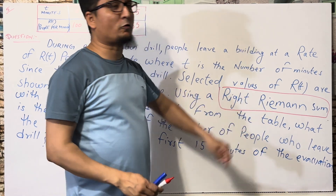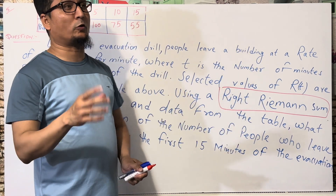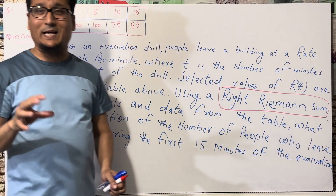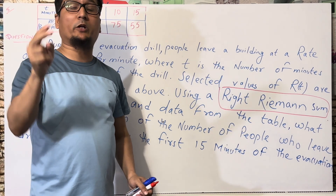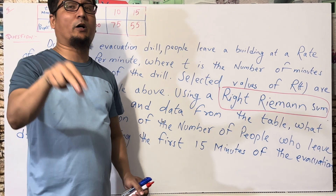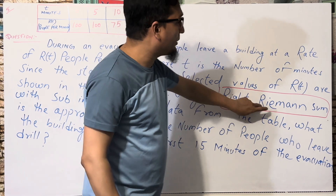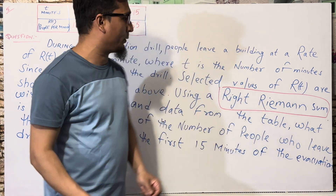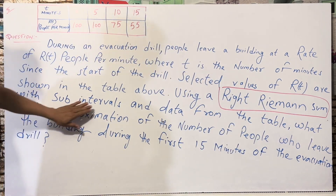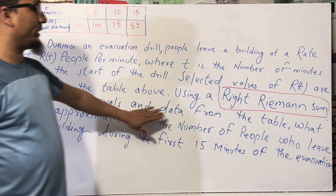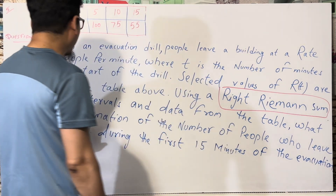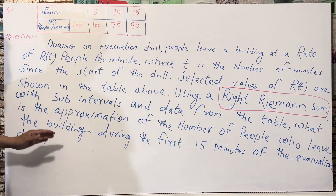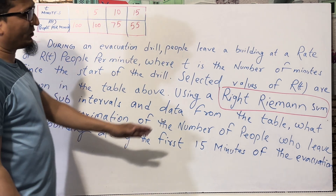Please be sure when you are going to solve this question in a global exam - please watch this one or two times or more. This is a right Riemann sum versus left Riemann sum, and that is a very important distinction. With the sub-intervals and the data from the table, the question asks for the approximation of the number of people who leave the building during the first 15 minutes of the evacuation drill.